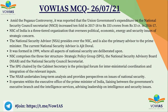Recently, amid the Pegasus controversy, it was reported that the Union government's expenditure on the NSC Secretariat increased tenfold from ₹33 crore in 2016-17 to ₹333 crore in 2017-18. The NSC was formed in 1999 and comprises a three-tiered structure: the Strategy Policy Group (SPG) at the first tier, followed by the National Security Advisory Board (NSAB), and then the National Security Council Secretariat.